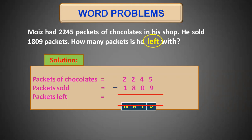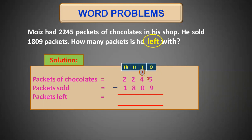Make sure you write the place values at the top so that you subtract ones from ones, tens from tens, hundreds from hundreds, and thousands from thousands. Starting from ones: five minus nine is not possible because five is smaller than nine. So ones will take borrow from tens — that four becomes three, and one ten is converted into ten ones. Ten plus five gives us fifteen ones. Fifteen minus nine is six. Coming to tens, which was previously four but is now three: three minus zero is three.